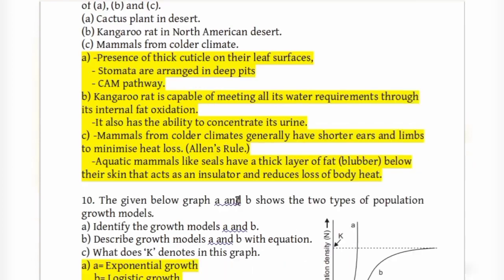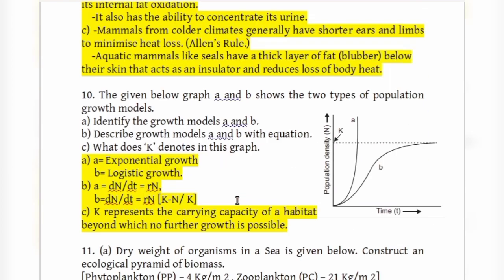The 10th question shows a graph with two types of population growth models. Model A is exponential growth and model B is logistic growth.